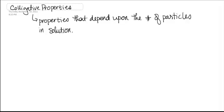Colligative properties are not dependent upon the identity of those particles — they're simply dependent upon how many particles are in solution. And the more particles in solution, the greater the colligative property effect. This goes along with the solutions chapter, because we don't find these when we have just a pure substance. The first one I want to talk about is vapor pressure lowering.